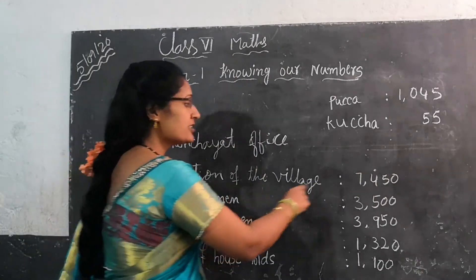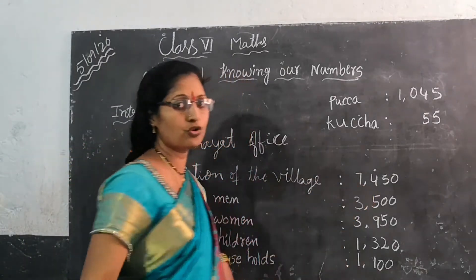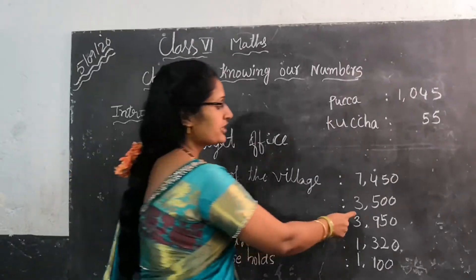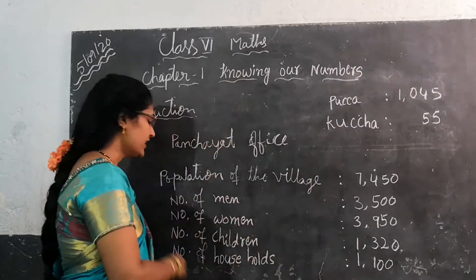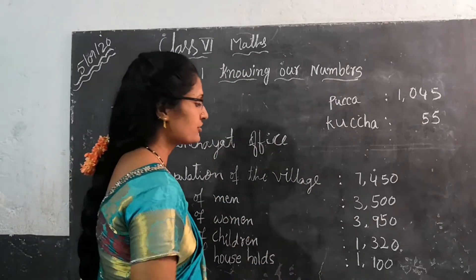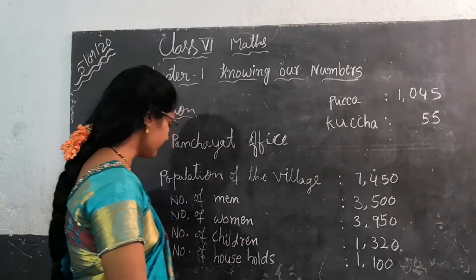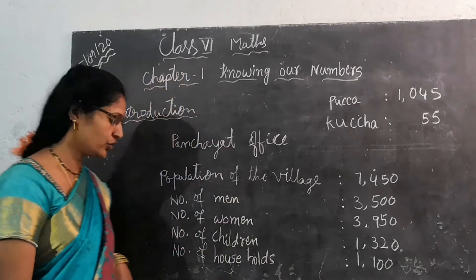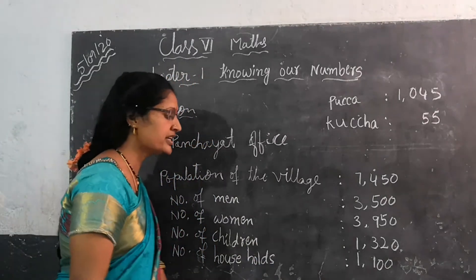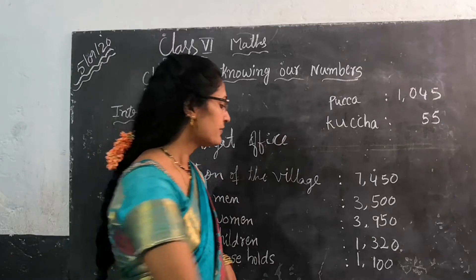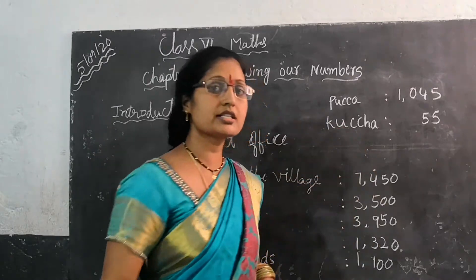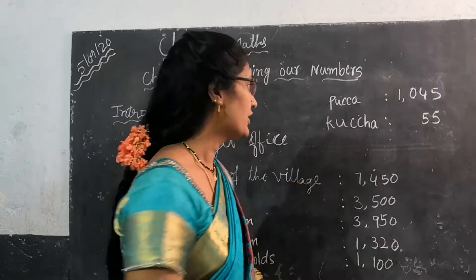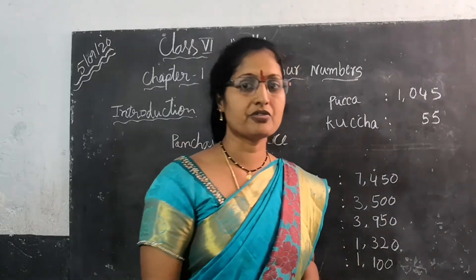Population of the village — total number is 7,450. Number of men is 3,005. Number of women is 3,950. Number of children is 1,320. Number of households is 1,100. Paka houses in that village — they have 1,045. And kacha houses is 55.